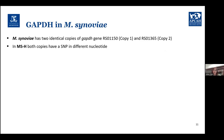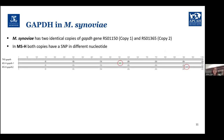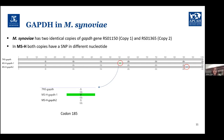Both of these copies have SNPs at different nucleotides. Looking at this alignment, the first line shows 7NS GAPDH, the second is the first copy of GAPDH in MSH, and the third is the second copy. Zooming in: at codon 185, 7NS GAPDH has alanine, but it changed to valine in the first copy of MSH GAPDH, while it remains alanine in the second copy. And at codon 306, there is alanine in 7NS GAPDH, while it changed to lysine in the second copy of GAPDH in MSH.